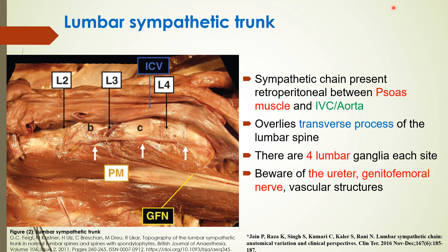The lumbar sympathetic trunk and sympathetic chain are present retroperitoneally, between the psoas muscle, inferior vena cava, and aorta, overlying the transverse processes of the lumbar spine. There are four lumbar ganglia on each side.